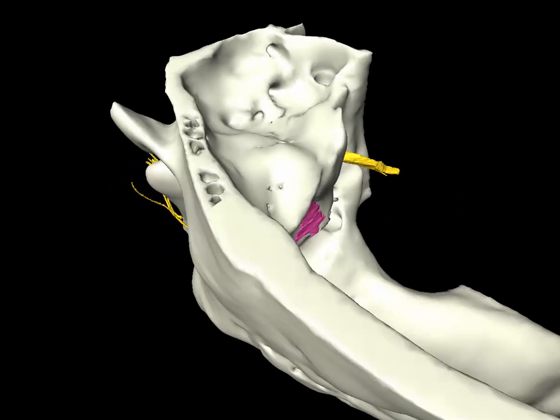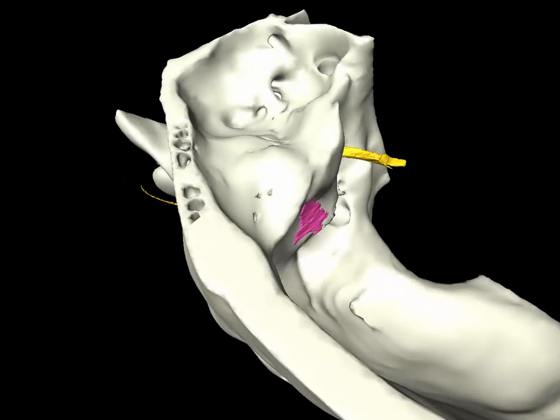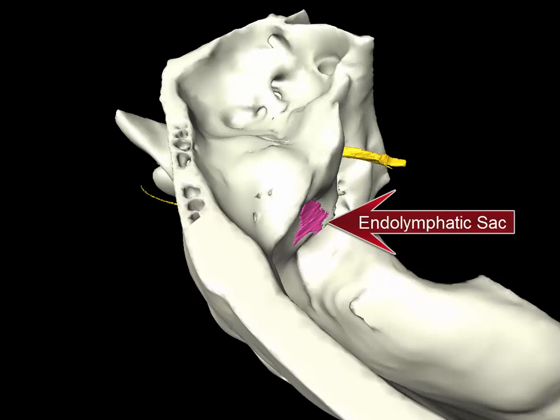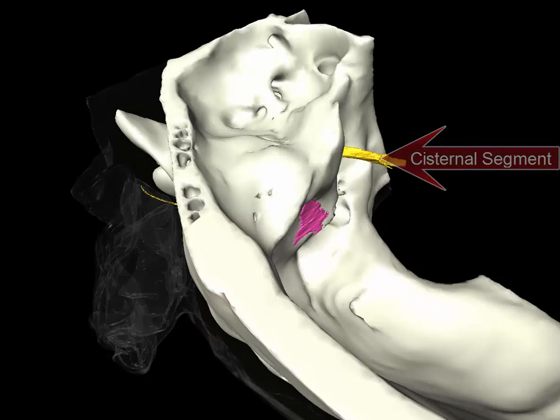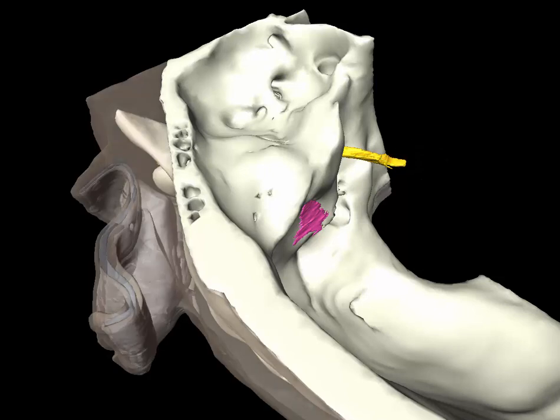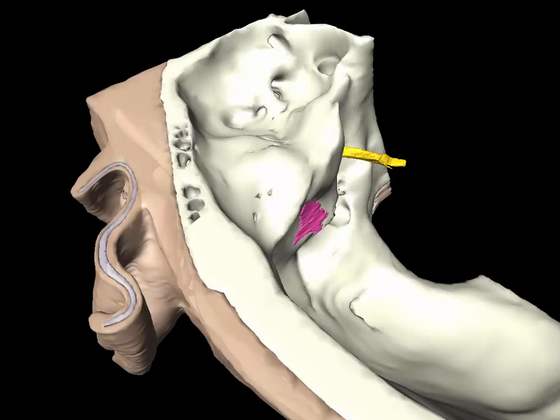Now we can see the middle fossa floor, the petrous ridge, and the posterior fossa. The endolymphatic sac sits in the center of the posterior fossa face of the temporal bone. The cisternal segment of the facial nerve can also be seen where it bridges from the pontomedullary junction to the IAC.